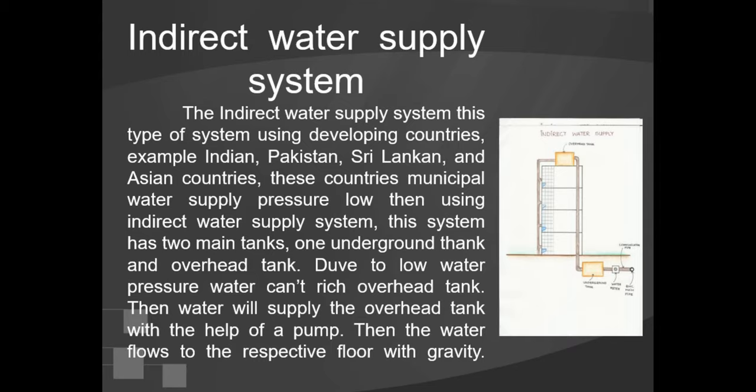Examples of countries using indirect water supply include India, Pakistan, Sri Lanka, and other Asian countries. When municipal water supply pressure is low, the indirect water supply system is used. This system has two main tanks: one underground tank and one overhead tank. Due to low water pressure, water cannot reach the overhead tank directly, so water is supplied to the overhead tank with the help of a pump. Then water flows to the respective floors by gravity.